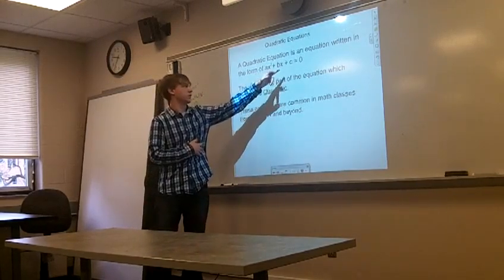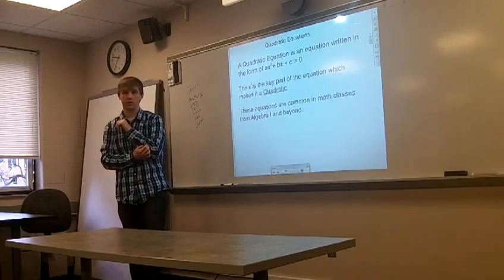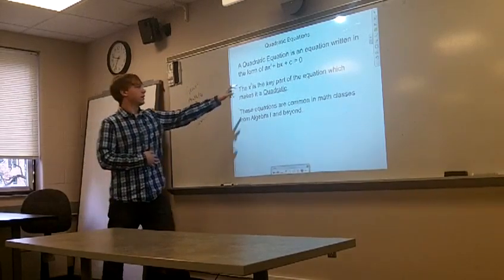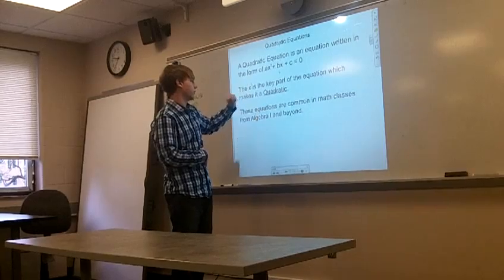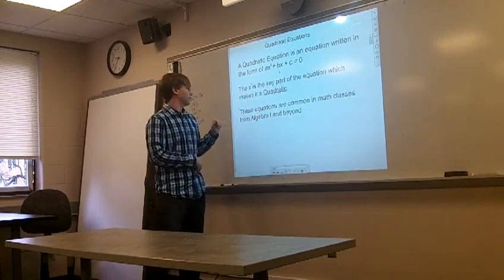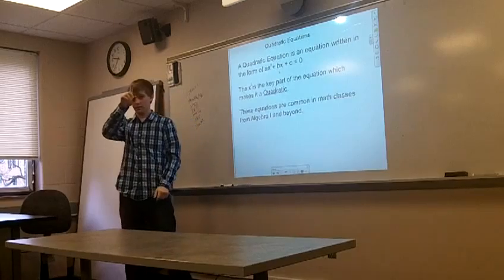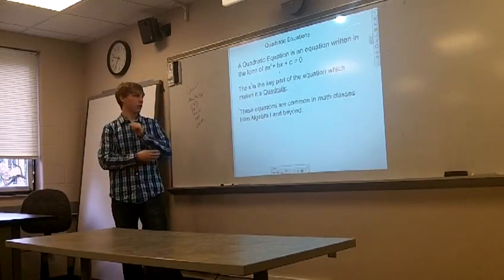Quadratic equations are usually written in this form: ax squared plus bx plus c, and the a's, b's, and c's are all going to be numbers. The x squared is what makes it quadratic. It gives it the big U shape, which is called a parabola.